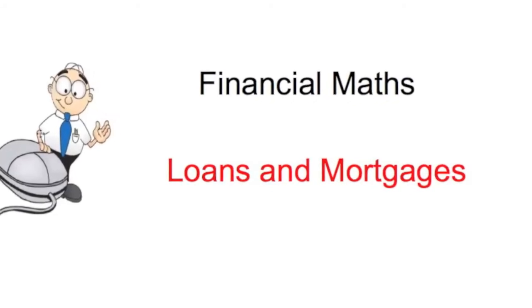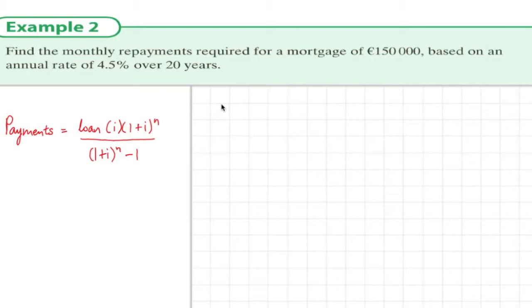Financial maths: loans and mortgages, example two. I've already written the formula that we need for this section. We're to find the monthly repayments on a mortgage of €150,000 given the annual rate over 20 years.